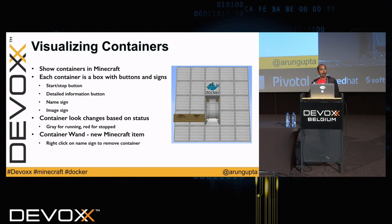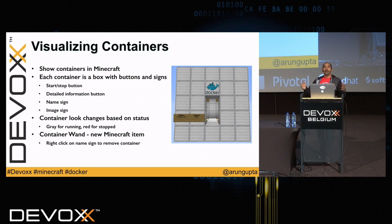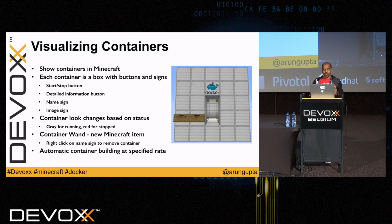We also created a new container wand. When I say we, he did all the coding — I helped with the thought process only. A new Minecraft item was created: a container wand. If you take the container wand and hit it on a Minecraft block, it will kill the container. We could also add other modes to it. Minecraft was constantly polling the Docker host where the containers are running and refreshing the display — that was another feature.